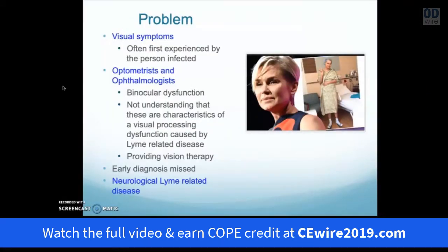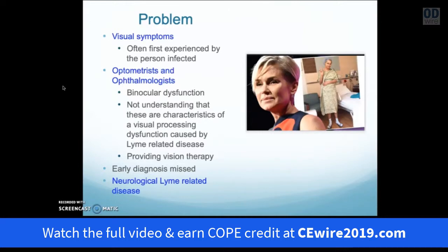There are visual symptoms often experienced early on with tick-borne disease. When patients go to optometrists and ophthalmologists, they present symptoms and often show binocular dysfunction. However, the binocular dysfunction is often misunderstood because there is a lack of understanding that an organic neurological condition is causing it. Many doctors have prescribed vision therapy to treat convergence insufficiency and accommodative insufficiency, only to go on for weeks and months without resolving the condition. The early diagnosis is thus missed, enabling an acute phase of Lyme or tick-borne disease to become chronic or neurological.